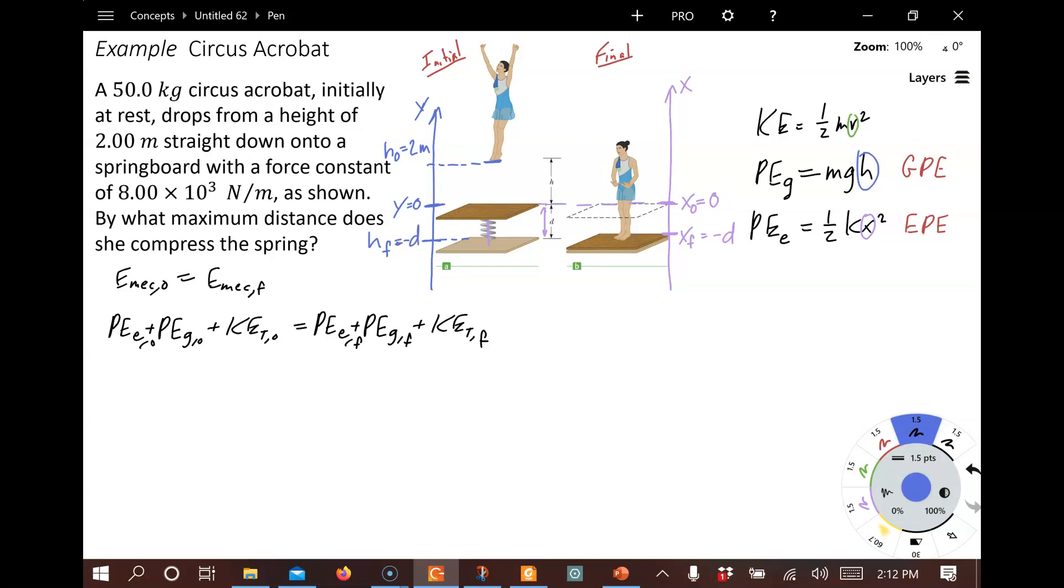And what we're trying to do in this case is figure out what is the maximum distance she compresses the spring. We are looking for d here. You see it shows up in a couple places. And we also want to look and see what the speeds are. In the beginning, the speed is zero. And at the end, the maximum distance that she compresses it, that means that she comes to rest momentarily when it's compressed to its maximum amount.